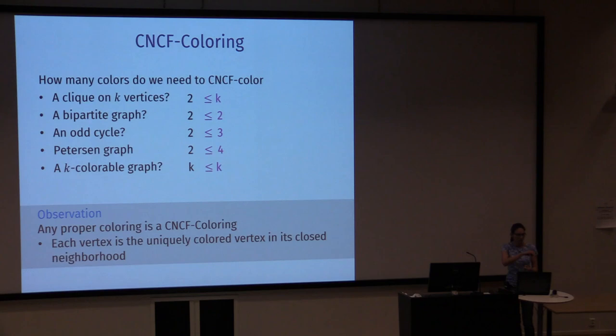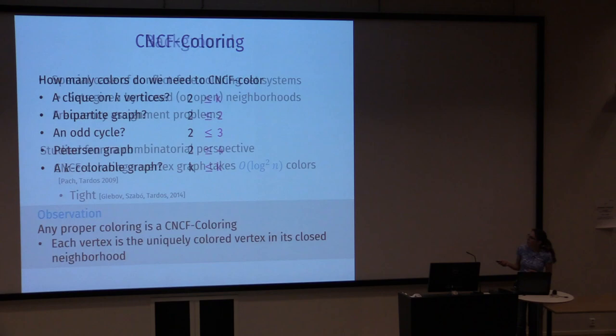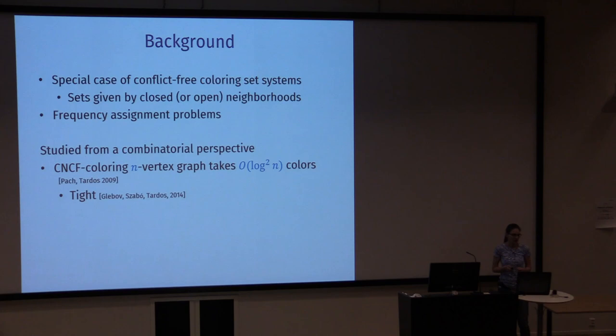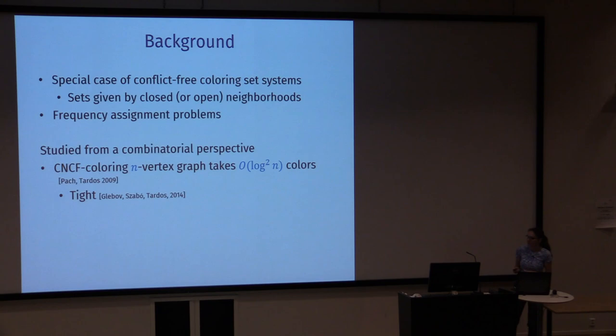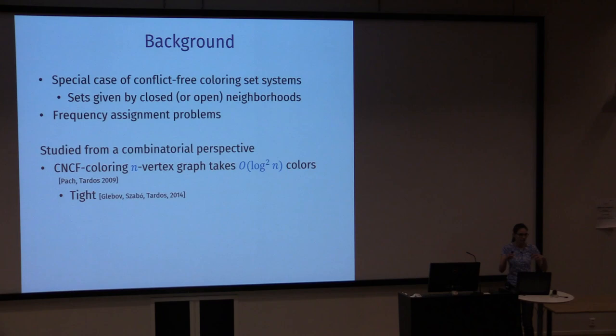This problem is a special case of the well-studied conflict-free colouring problem, where you have a universe and some sets over this universe, and the question is to colour the elements such that all sets are conflict-free coloured. The graph version uses close or open neighbourhoods as the sets. This is motivated by frequency assignment problems — assigning radio frequencies while ensuring there's always at least one tower you can connect to without interference.